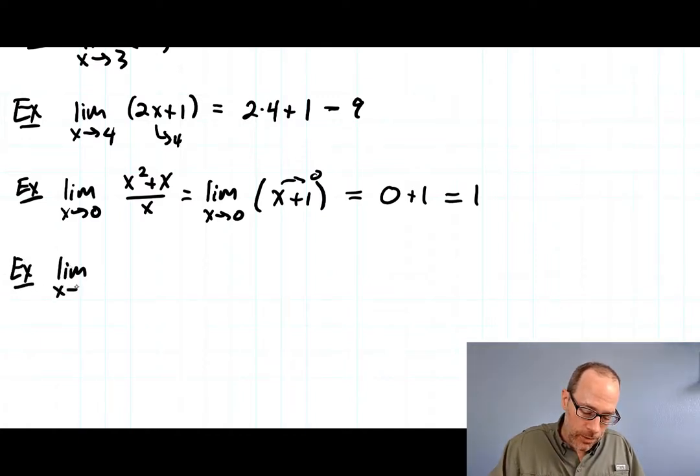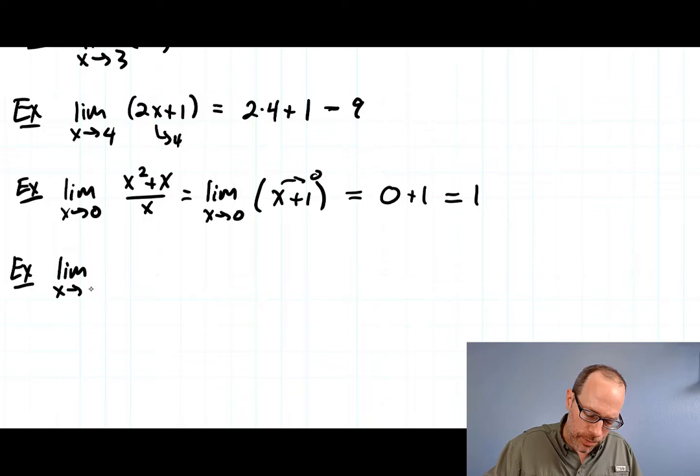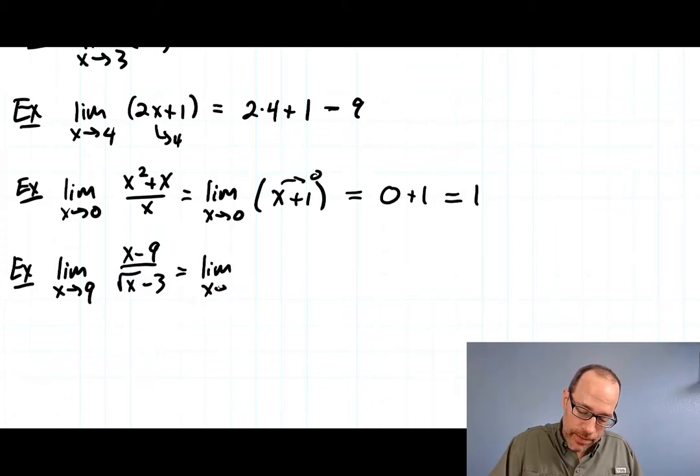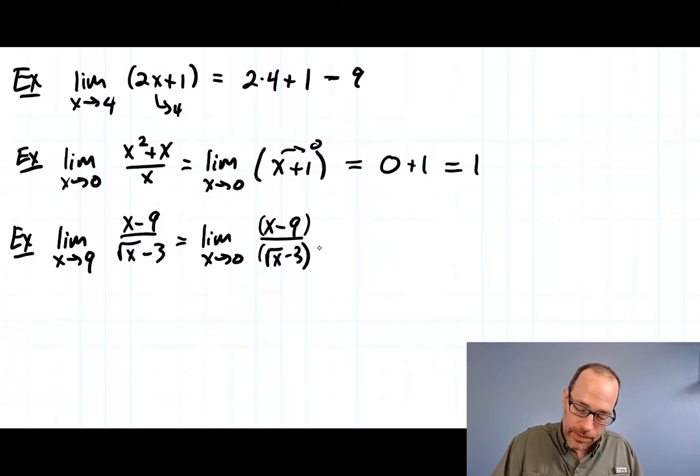In general, there's no one procedure that always works, but there are common tricks. Here's another: the limit as x goes to 9 of (x - 9)/(√x - 3). I can't plug in 9 because I'd get 0 in the denominator. The trick here is multiplying by the algebraic conjugate. I'll multiply top and bottom by √x + 3.